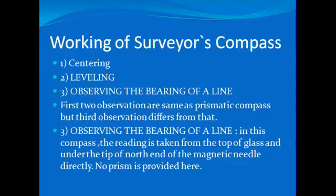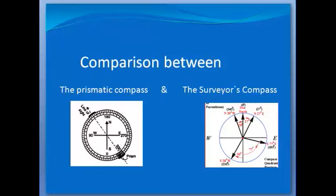Now, working of the surveyor's compass. The centering and leveling is same as in prismatic compass, but observing the bearing of a line is different in surveyor's compass. In this compass, the readings are taken from the top through glass and under the tip of the north end of the magnetic needle directly. No prism is provided here.